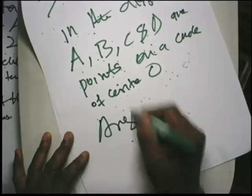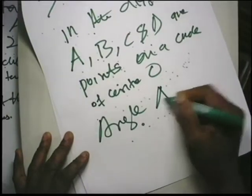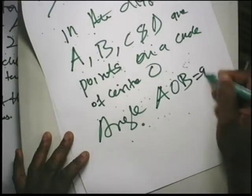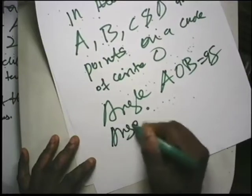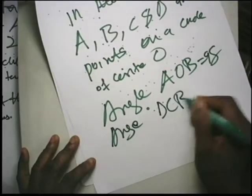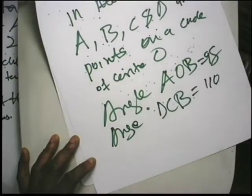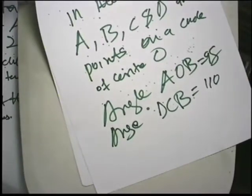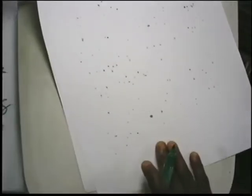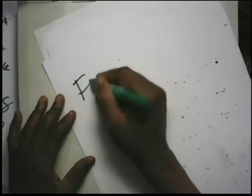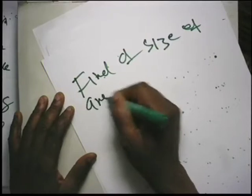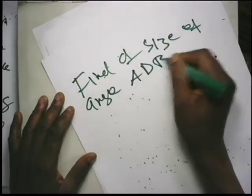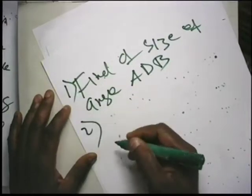Angle AOB equals 98 degrees and angle DCB equals 110 degrees. Find the size of angle ADB, giving a reason. Also find angle DAB, which equals 70 degrees.